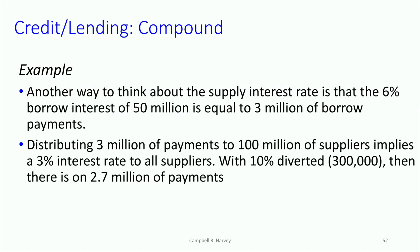Another way to think about this: the 6% borrow rate doesn't generate 6 million in revenue — that would only happen at 100% utilization. Since only 50 million of the 100 million is being used, it generates just 3 million. That's why the supply rate is less than the borrow rate, and it's reduced further because some money is set aside for under-collateralization coverage.